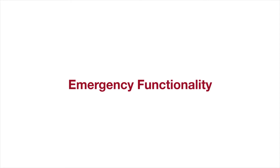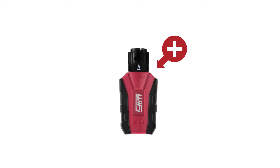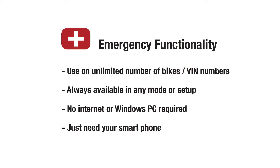Let's take a closer look at emergency functionality. It's the ability to do an auto scan, view ECU information, read and clear fault codes on all control units, and view real-life sensor data on all engine control units. Emergency functionality is embedded on the device and it does not affect the 10 bike VIN limit you have on your enthusiast license, unlike service functionality. That means you can use emergency functionality to help as many friends out of as many muddy ditches as you care to. It's always available in any mode or setup because it is embedded on the device and does not require internet or the Windows PC application — you just need your smartphone when you're out in the field.